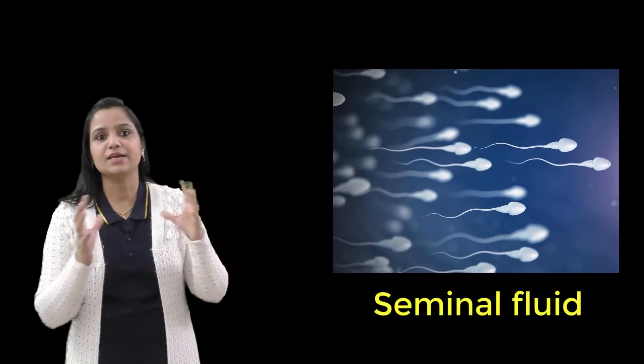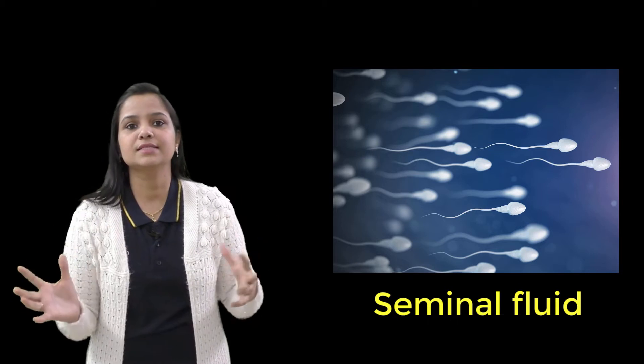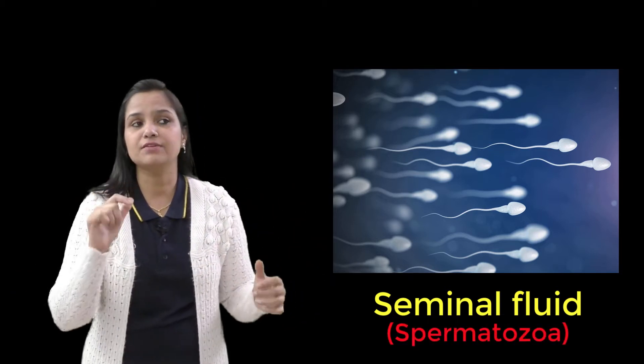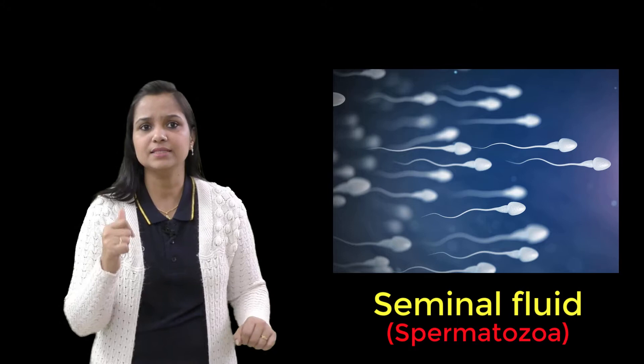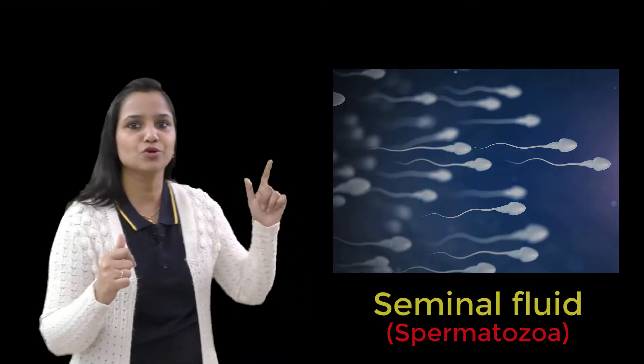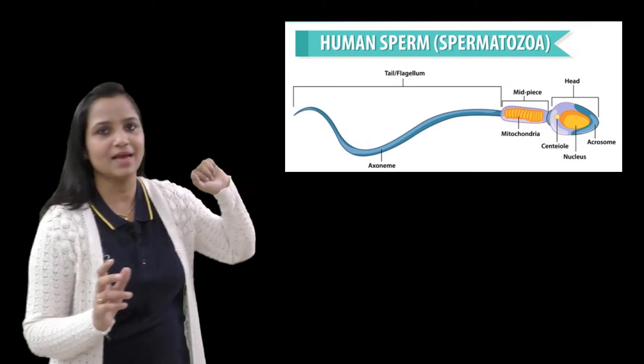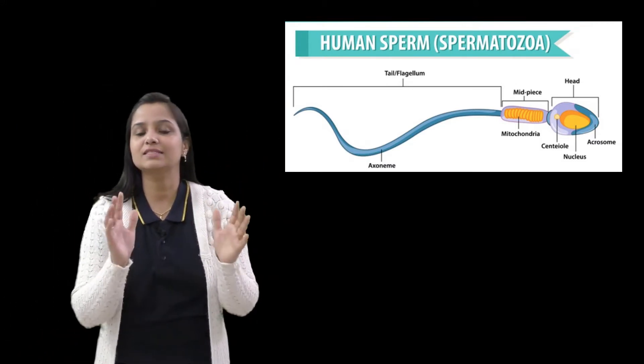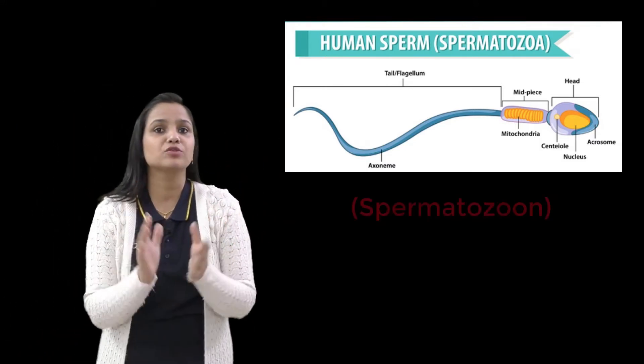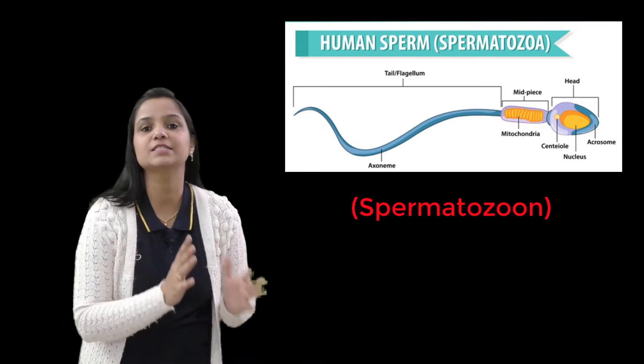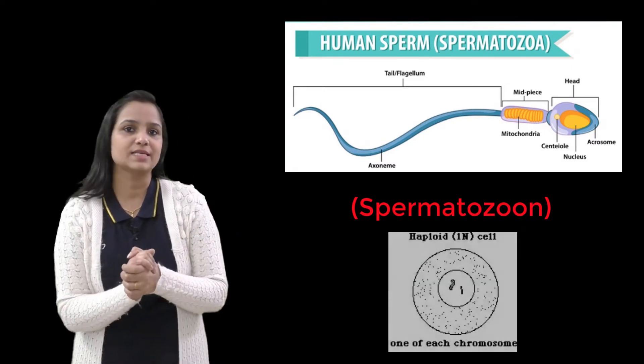So first of all we will talk about the semen, then after we will see the sperms. So semen is a seminal fluid, an organic fluid which contains spermatozoa. Now many of you think what is spermatozoa, right? So fine, let me show you some pictures first. Spermatozoa, or singularly spermatozoon, is a motile sperm cell and moving form of the haploid cell